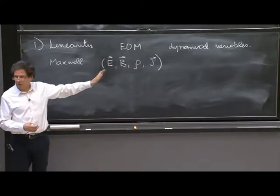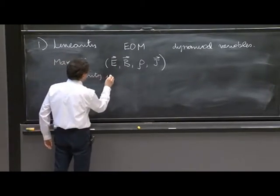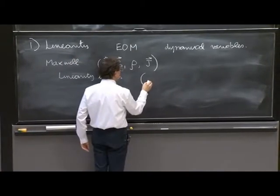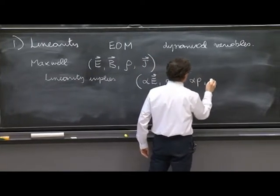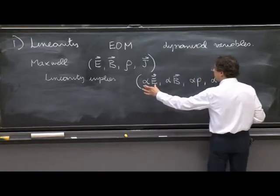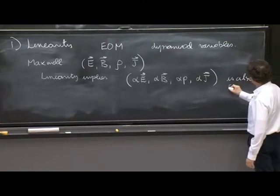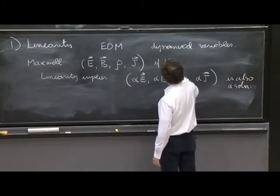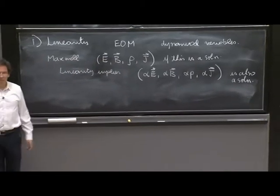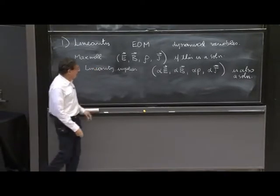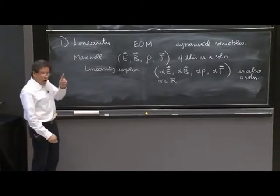So suppose this is a solution, that you verify that it solves Maxwell's equation. And then linearity implies the following: you multiply this by alpha, alpha E, alpha B, alpha rho, and alpha J. And think of this as the new electric field, the new magnetic field, the new charge density, and the new current, is also a solution. If this is a solution, linearity implies that you can multiply those values by a number, a constant number, alpha being a real number. And this is still a solution.